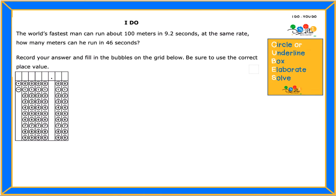Hi! Let's write this question. The world's fastest man can run about 100 meters in 9.2 seconds. At the same rate, how many meters can he run in 45 seconds?